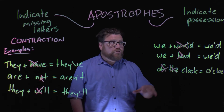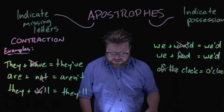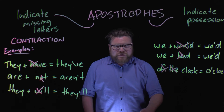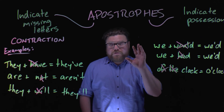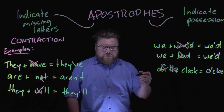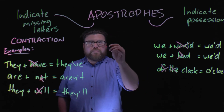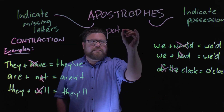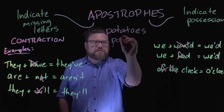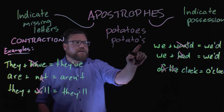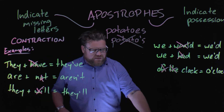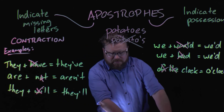One last thing before we move on to apostrophes being used to indicate possession: what to do — or rather what not to do — when you have a plural. Do not use apostrophes to indicate a plural. It is a common mistake made by students and adults alike. For example, the word 'potatoes' — there's the singular, and if you've got more than one potato, it's 'potatoes,' not 'potatoes' with an apostrophe. That is an incorrect use of an apostrophe, and it may be a bad habit we can break today.